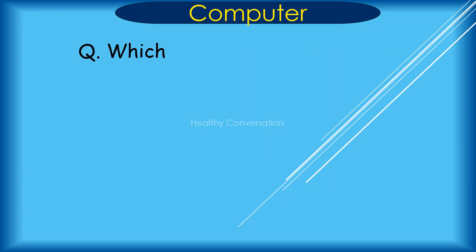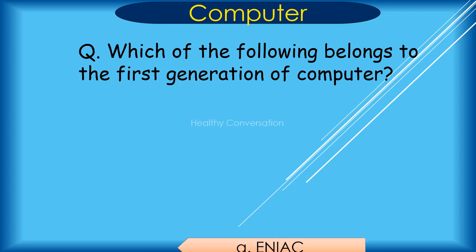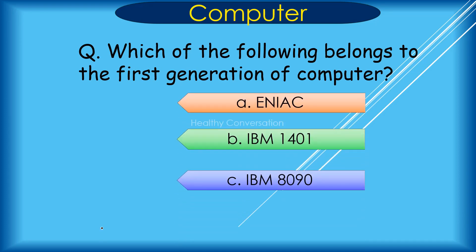Question: Which of the following belongs to the first generation of computers? A. ENIAC, B. IBM 1401, C. IBM 8090. Correct answer is A. ENIAC.